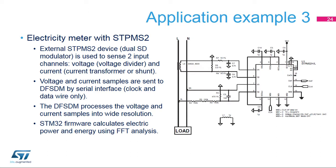Another example shows a typical one-phase electricity meter design using an STPMS2 device and an STM32 microcontroller. The STPMS2 is a dual-channel Sigma-Delta modulator designed for electricity meter applications, featuring voltage and current channel inputs with a programmable gain amplifier on the current channel. Sampled 1-bit data are sent by the serial interface to the DFSDM interface. Both voltage and current 1-bit data samples are sent on the same data wire, with voltage sampled on the rising clock edge and current on the falling clock edge. The clock is provided by the DFSDM and can run up to 4 MHz. The firmware uses FFT analysis to calculate electric power and energy from the current and voltage samples.